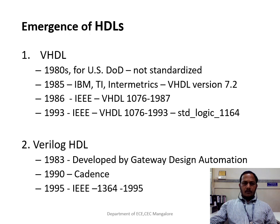There are two types of HDL: VHDL and Verilog HDL. VHDL stands for very high speed integrated circuit hardware description language.